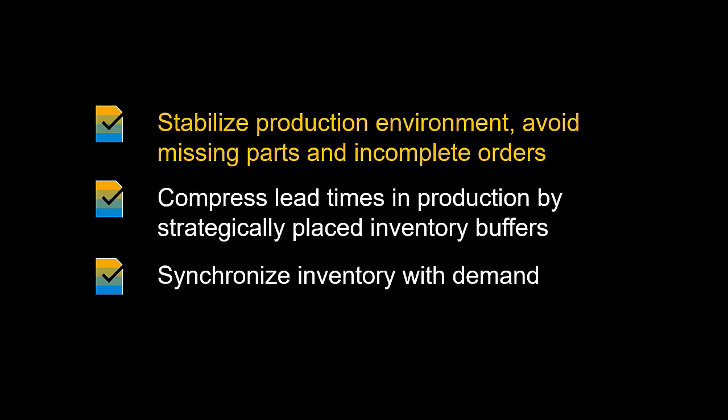Let's first look at the potential benefits which can be achieved by using DDMRP. The first benefit is the ability to stabilize the production environment. By utilizing the buffers at the decoupling points, production will be helped by avoiding key missing parts, resulting in less incomplete production orders. Secondly, the strategic decoupling in production through the use of buffers means that the lead times in production will be compressed, making execution and planning less error-prone.